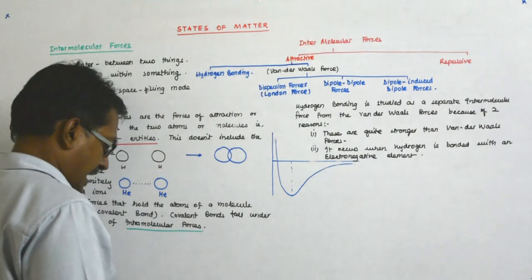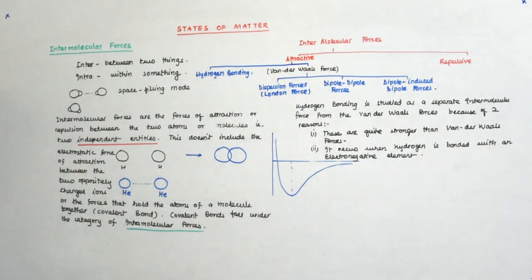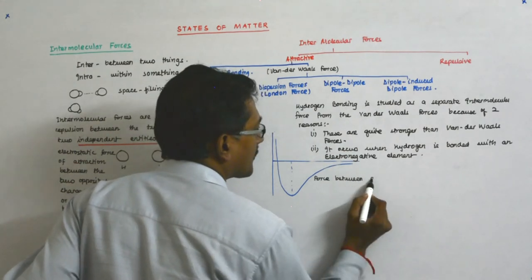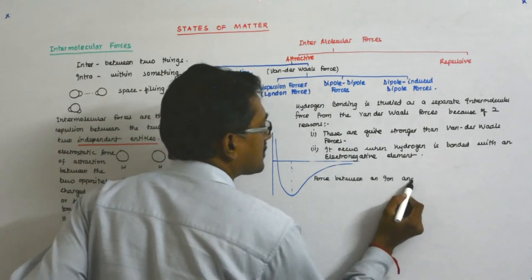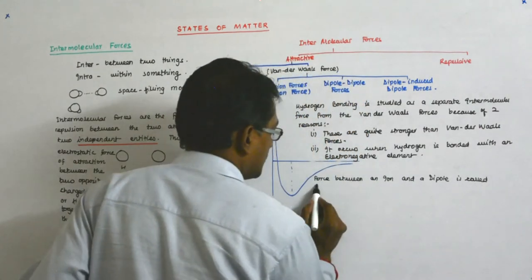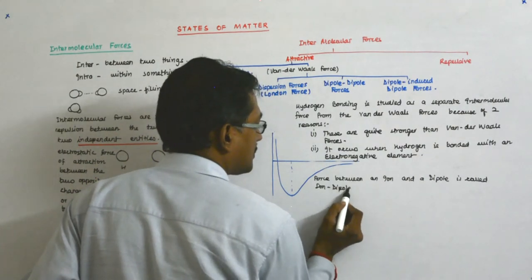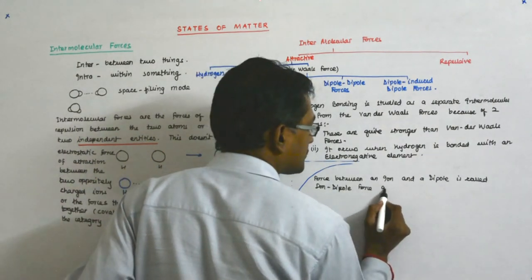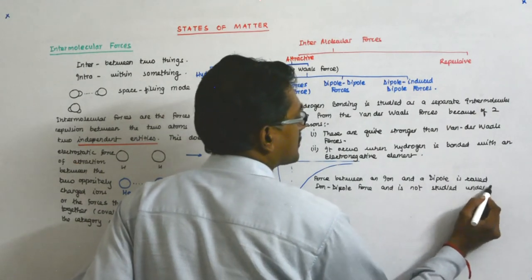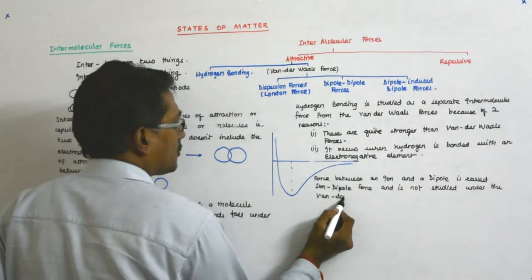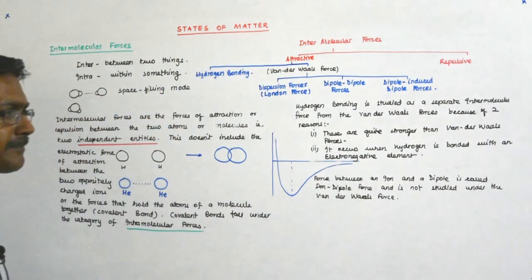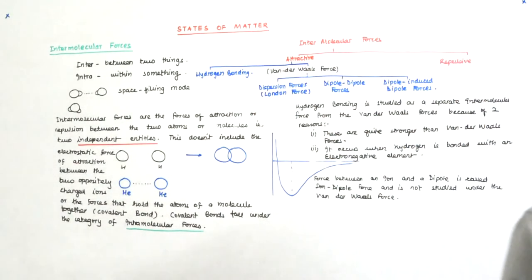The attractive force between an ion and a dipole is called the ion-dipole force, and it is not studied under the van der Waals forces. Now we will start discussing them one by one.